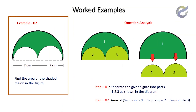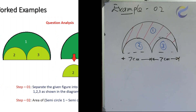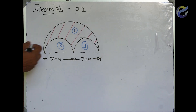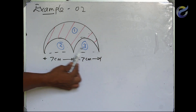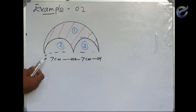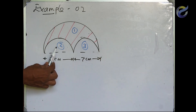Now we will try example number 2. This diagram shows three semicircles numbered 1, 2, and 3. Number 1 is the largest one with a radius of 7 centimeters. To find the shaded region, find the area of semicircles 2 and 3 and subtract from semicircle number 1. Since semicircles 2 and 3 are equal, you can consider them as one complete circle, or simply subtract twice.